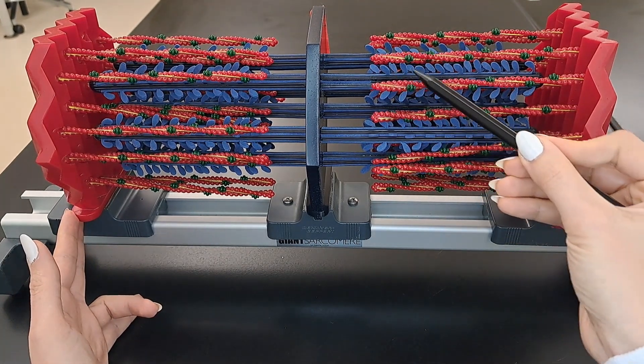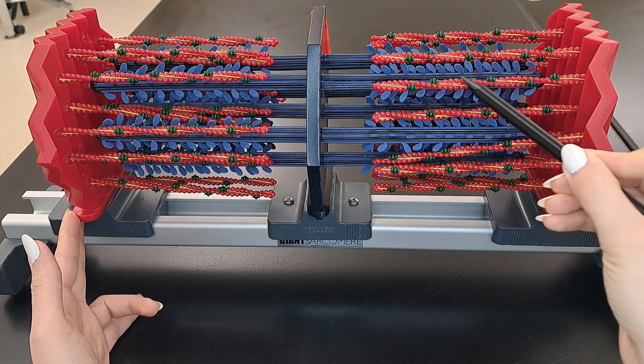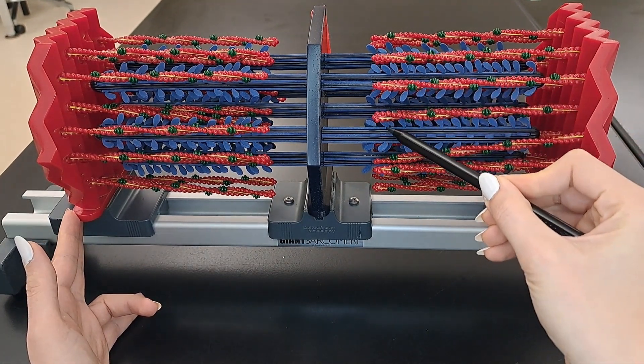We have the thin myofilaments in red, yellow, and green, and the thick myofilaments in blue.